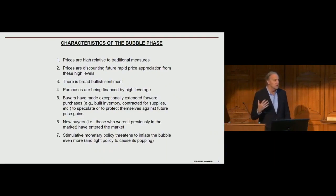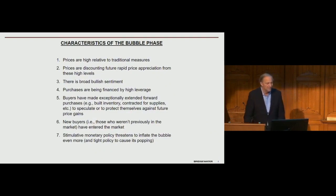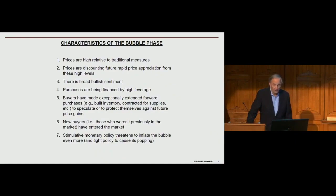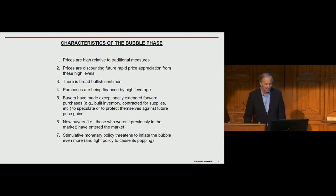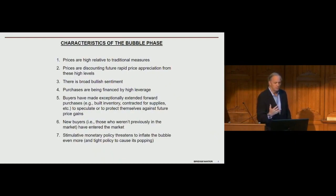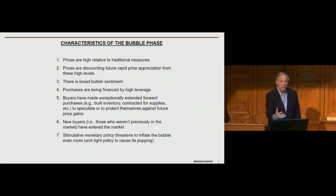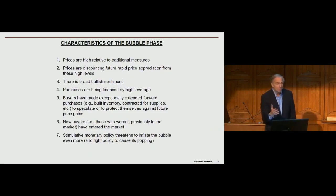There is broad bullish sentiment — you're walking around and everybody says this is great and it's going to go up. Then there are purchases financed by high leverage: buying on borrowed money, buying stocks or homes on borrowed money. And sometimes buyers have exceptionally extended forward purchases — in other words, built up inventory because they're worried prices are going to go up, or contracted for supplies, or maybe buying an apartment to speculate that apartment prices are going to go up.